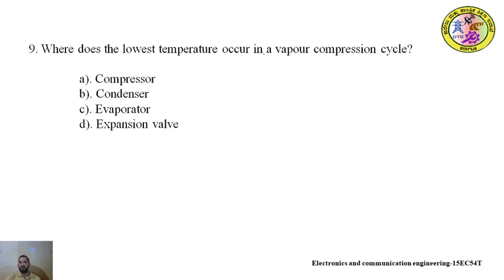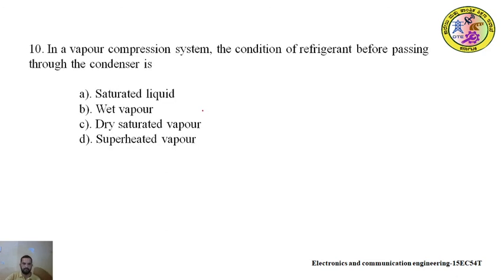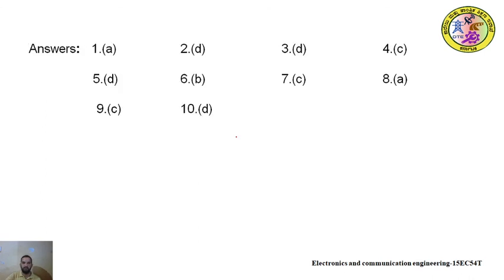Ninth question: where does the lowest temperature occur in the vapour compression cycle — compressor, condenser, evaporator, or expansion valve. Answer: evaporator. Tenth question: in a vapour compression system, the condition of refrigerant before passing through the condenser is — saturated liquid, wet vapour, dry saturated vapour, or superheated vapour. Answer: superheated vapour. Here are the answers for the above MCQs.